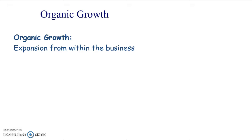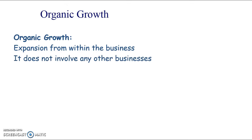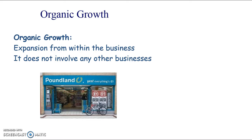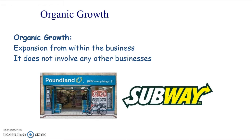Organic growth is expansion from within the business and doesn't involve any other businesses. A good example is Poundland, which has grown a lot over the last few years partly due to the recession and people being more budget conscious. Another type of organic growth is selling your business as a franchise to franchisees. Subway has had phenomenal growth over the last ten years, especially in the UK - it's a really big franchise and that's one of the ways they have grown.